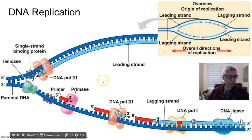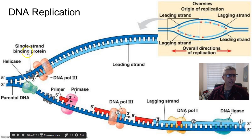Hopefully I can help clarify any misconceptions. The helicase is the enzyme responsible for unzipping the DNA in the middle. As it does that, you'll see there are single-strand binding proteins that attach right after the helicase and help give each side of the DNA strand some structure, because they're no longer bonded together in the middle where the nitrogen bases were.